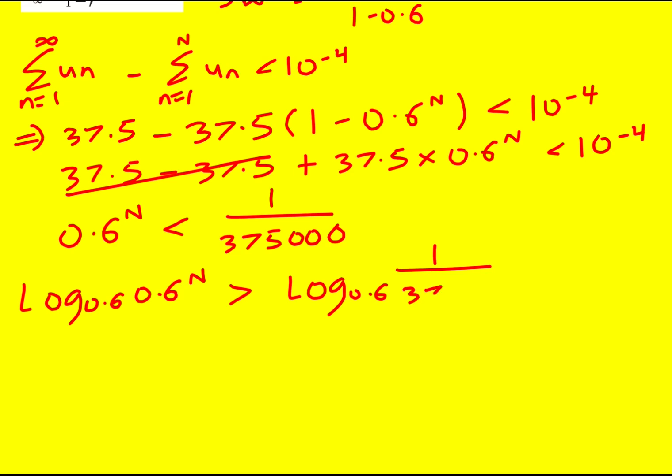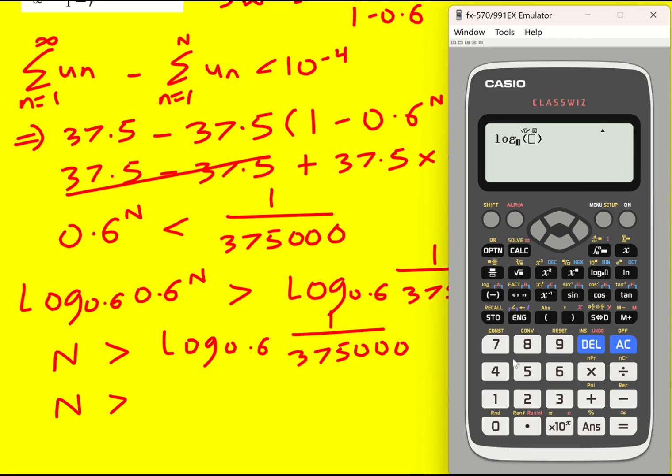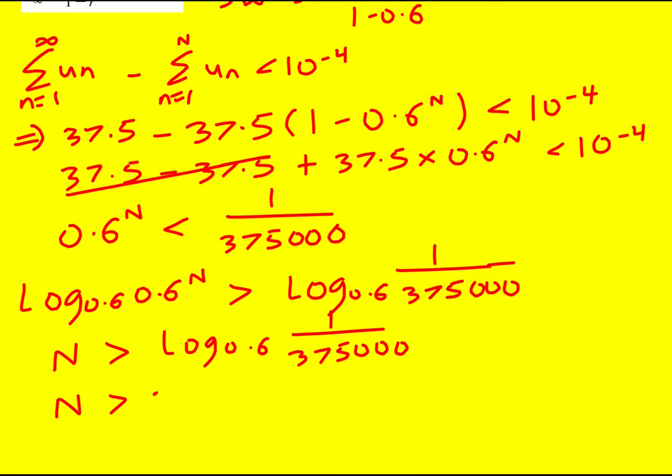So we're going to get this. Now you can bring the n down, and then log to base 0.6 of 0.6 is just 1. So we get n is greater than log to base 0.6 of this. Let's work out what that is. 25.125. So the smallest n is going to be 26.